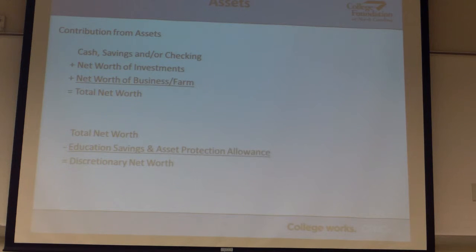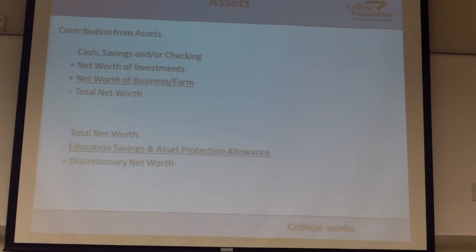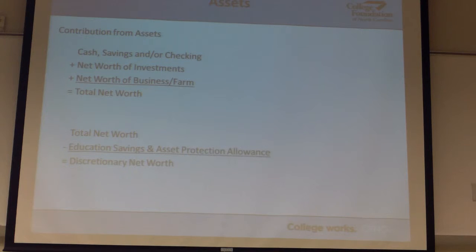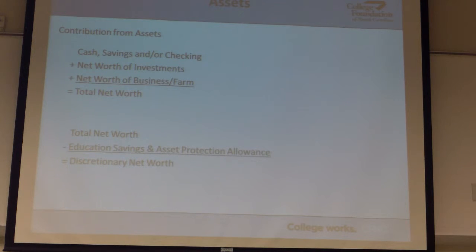Contributions for assets: capital savings, checking, net worth, investments. We come up with all your assets and your total net worth, and then we say we need to protect a portion of that for some things. What's left is your discretionary net worth — that's what is now available that you might be able to contribute for your student. Because we know everybody needs some emergency savings, that's the asset protection allowance — you've got to have a little bit of emergency savings for something that could go wrong. And if you have other kids in the house, you've got to be saving for them to go to college, so they're going to let you save a little bit and protect that out of whatever you report as assets.